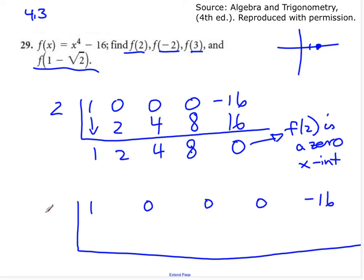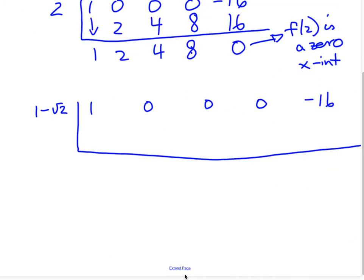minus 16. Notice I'm giving myself lots of room. And out here I put 1 minus root 2. Okay, here we go. So bring the 1 down, that'll be the easiest part. Like I might do in different colors here. So 1 times 1 minus root 2 is 1 minus root 2. Yeah, that's good.